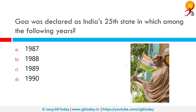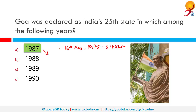Goa was declared as India's 25th state in which year? On 16th May 1975, Sikkim became a part of India and was the 22nd state of the Indian Union — its monarchy was abolished at that time. Goa became a part of India much later, in 1987, on 30th May. Arunachal Pradesh and Mizoram also became part of India on February 20th. Goa's northern exclaves of Daman and Diu and Dadra and Nagar Haveli became separate union territories.